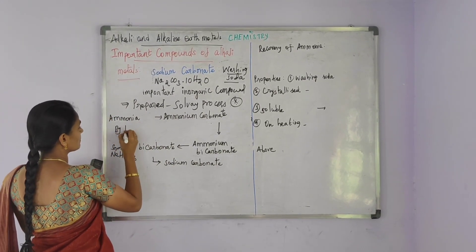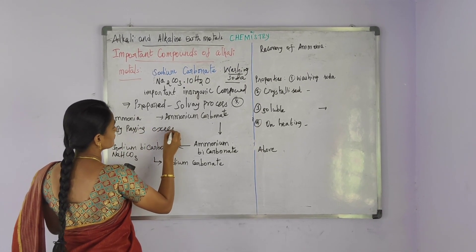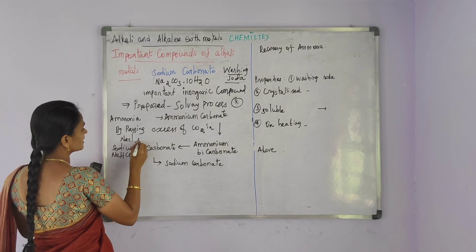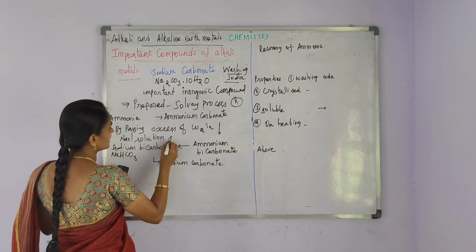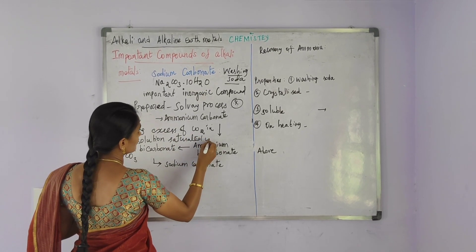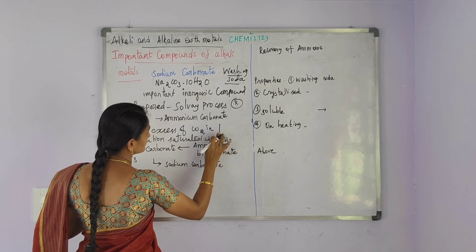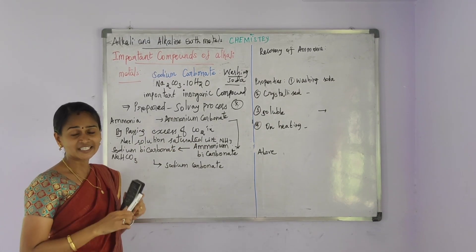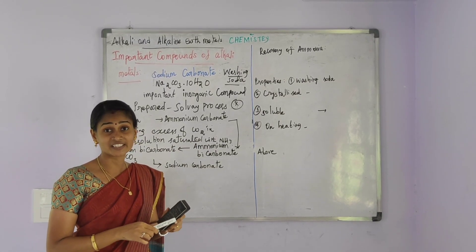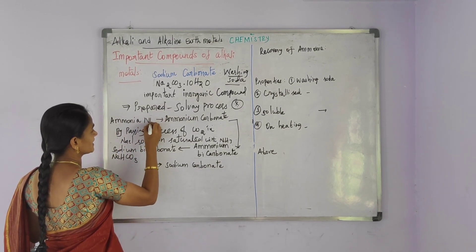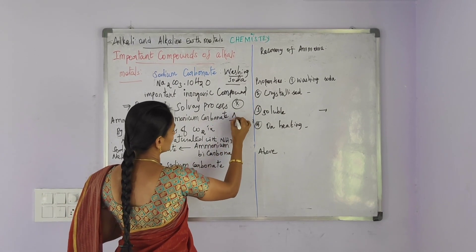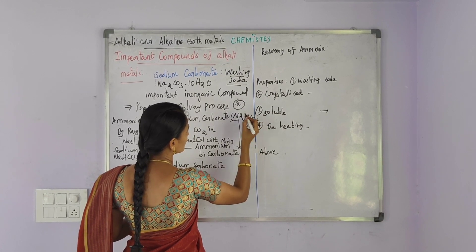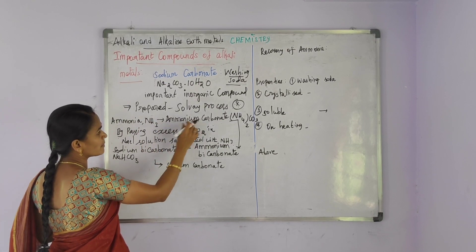First of all, by passing excess of carbon dioxide into a sodium chloride solution that is saturated with ammonia. Ammonia (NH3) is converted into ammonium carbonate: NH3 is converted to (NH4)2CO3. That is, ammonia is converted into ammonium carbonate.